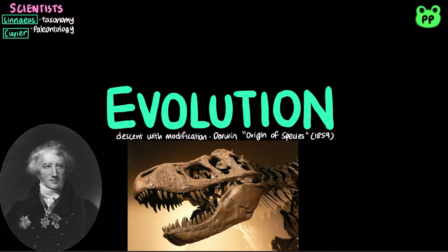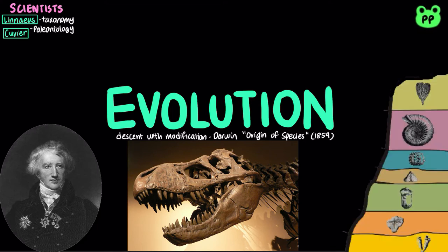Fossils are remains or traces of organisms from the past, usually found in sedimentary rock, which appears in layers or strata. Cuvier recognized gaps in fossil succession as mass extinction events. He proposed the theory of catastrophism, which states that events in the past occurred suddenly and were caused by mechanisms different from those operating in the present.